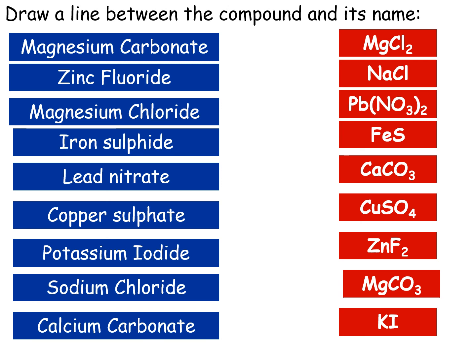Draw a line between the compound and its name. Answers: magnesium carbonate, zinc fluoride, magnesium chloride, iron sulfide, lead nitrate, copper sulfate, potassium iodide, sodium chloride, calcium carbonate. Thank you.